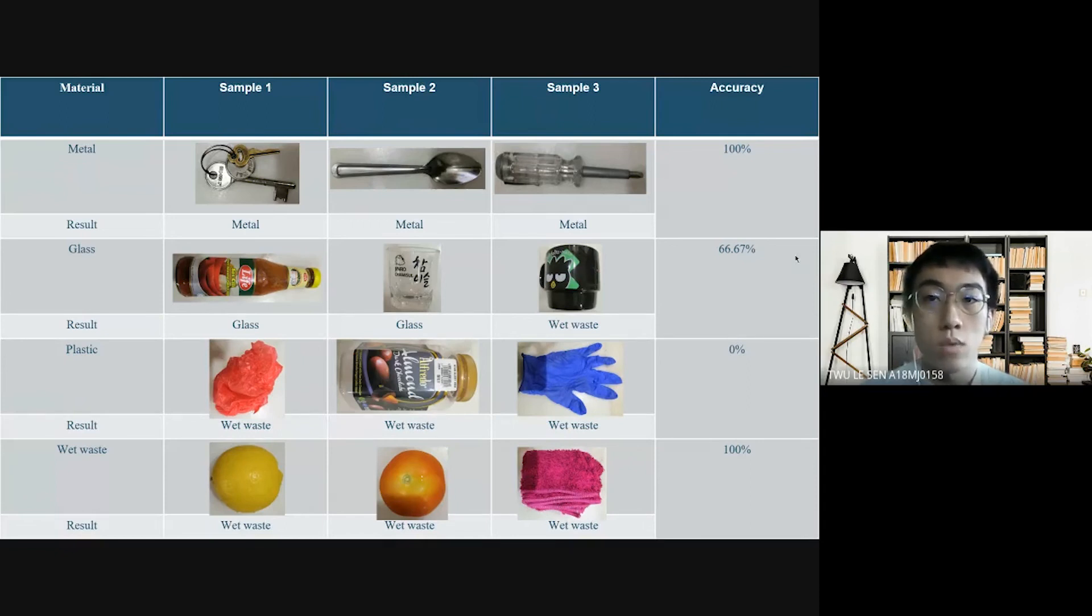The next one is the glass. We use the capacitive sensor to detect the glass. So here we got the chili sauce and two kinds of cup. But here we can see there are only one cup detected as glass and another one doesn't. So the capacitive sensor is only on for the first two samples and the last sample is off. So the last sample will be detected as wet waste. So the third one we are also using the capacitive sensor, but this time we are using it to detect the plastic. But unfortunately after our testing, the capacitive sensor cannot detect the plastic. So the capacitive sensor is always off, then the plastic bag, the plastic bottle and a glove are differentiated as wet waste based on our flowchart.